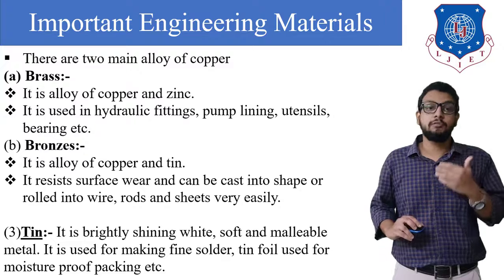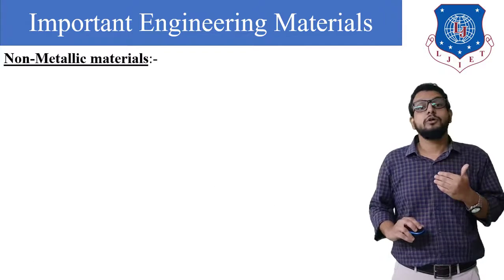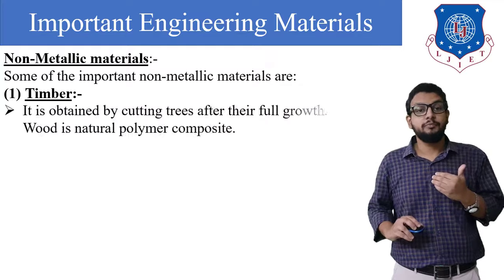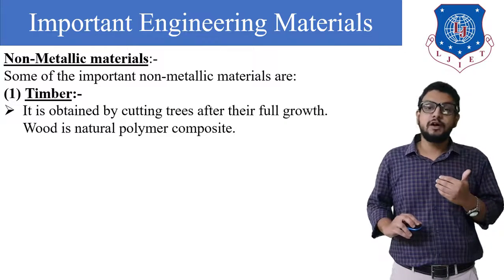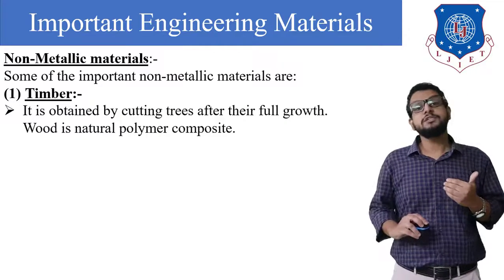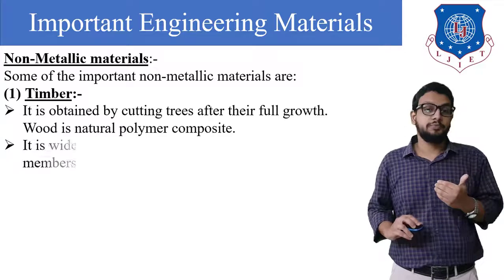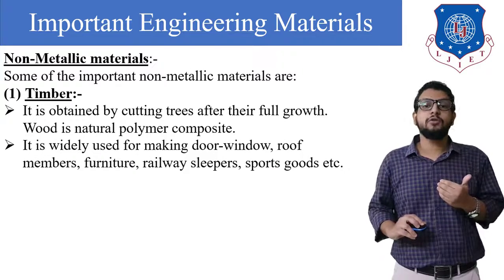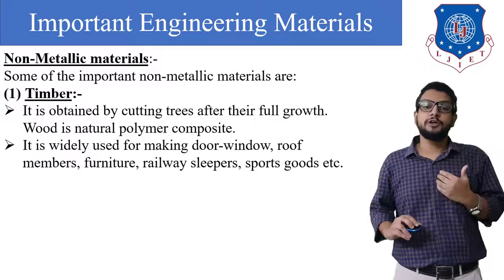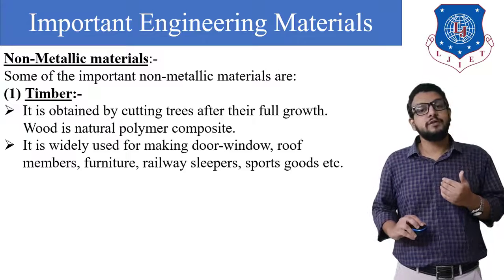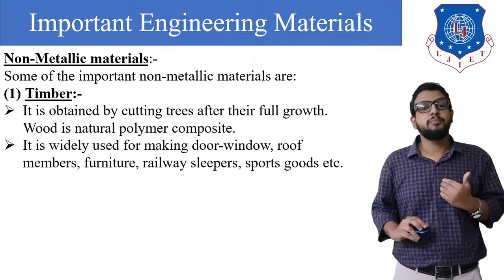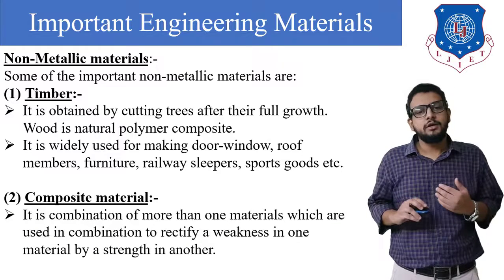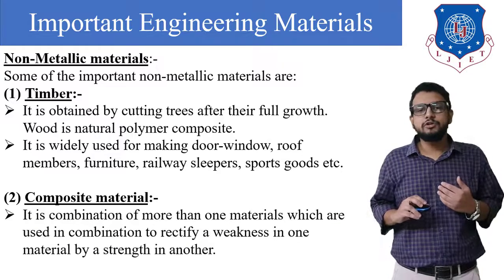Now let us see non-metallic materials. The first is timber. It is obtained by cutting trees after full growth. Wood is a natural polymer composite. It is widely used for making doors, windows, roof members, furniture, railway sleepers, sports goods, etc.